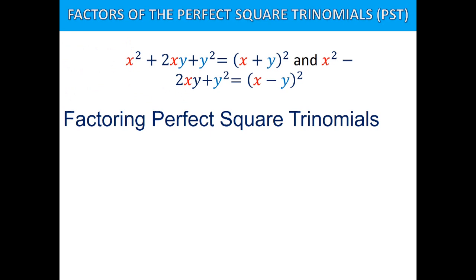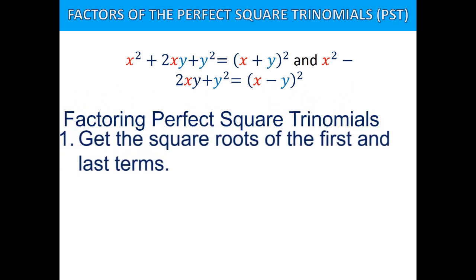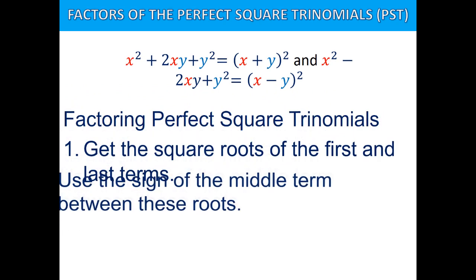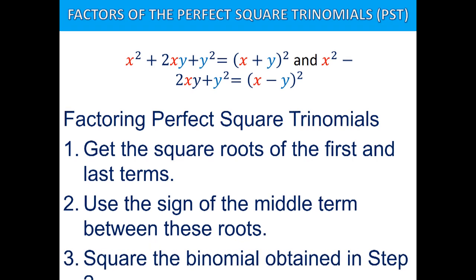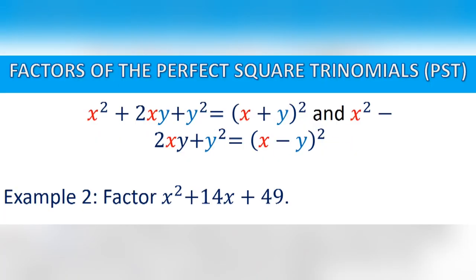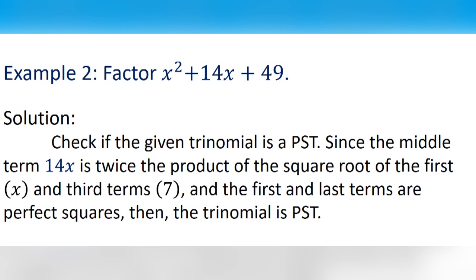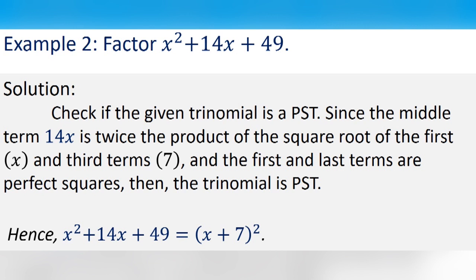Factoring perfect square trinomials — steps. First, get the square root of the first and last terms. Second, use the sign of the middle term between these roots. Third, square the binomial obtained in step 2. Sample number 1: factor x squared plus 14x plus 49. Since the middle term 14x is twice the product of the square root of the first term, x, and the third term, 7, and both first and last terms are perfect squares, the trinomial is a PST. Hence, x squared plus 14x plus 49 equals the square of x plus 7.